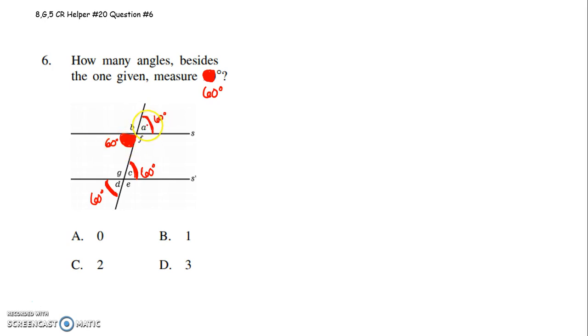Hopefully you know that corresponding angles, A and C are corresponding. Those are congruent. C and D are vertical, so those are congruent.